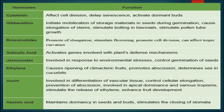Abscisic acid maintains dormancy in seeds and buds and stimulates the closing of stomata. Abscisic acid is also known as the antagonistic hormone of gibberellin because both perform opposite functions. Salicylic acid and jasmonates are also present in the plant for different activities. These are the list of hormones performing different functions in the plant.